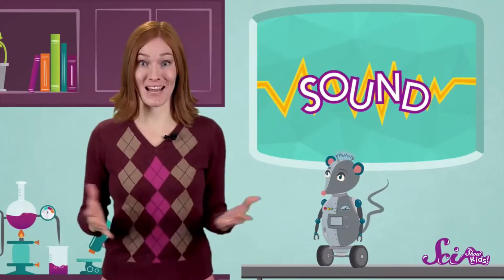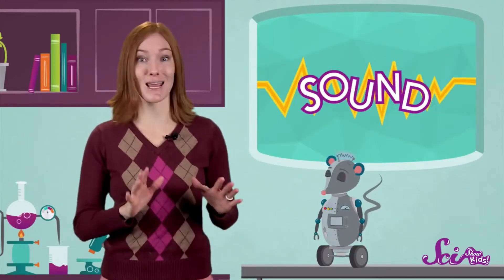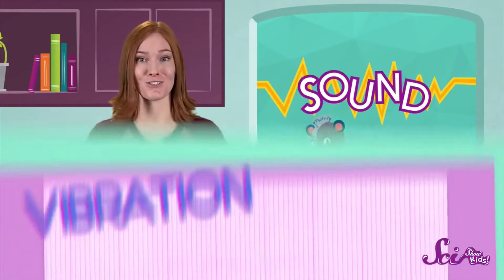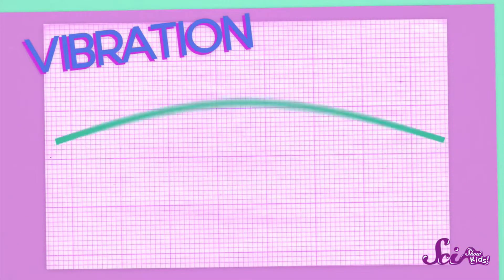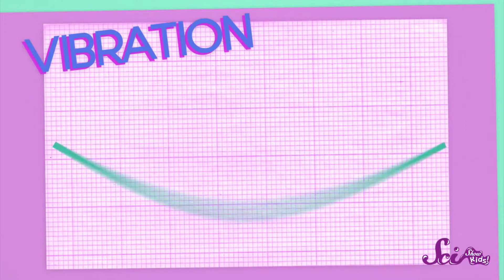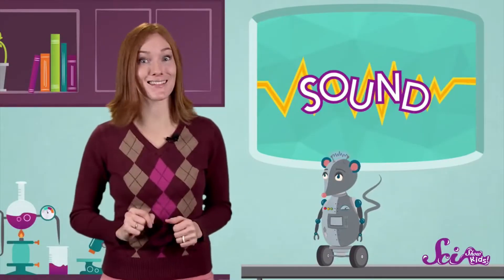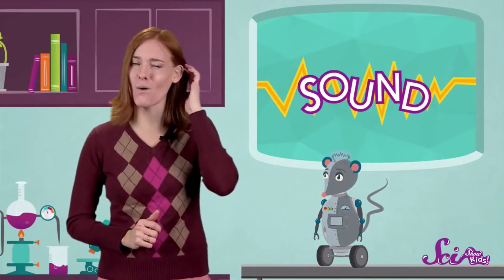It doesn't matter what makes a sound though, all sounds are made the same way, through vibrations. When something vibrates, it moves back and forth really fast. So fast in fact that our eyes often can't see it moving. But other parts of our body can sense vibrations, and I bet you know what parts those are. That's right, our ears!